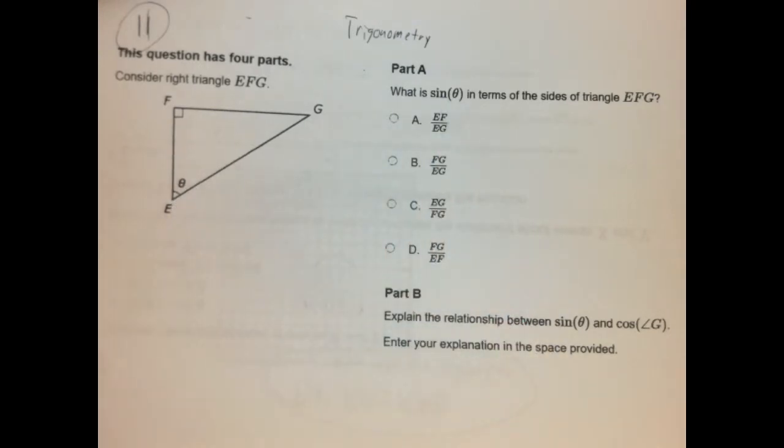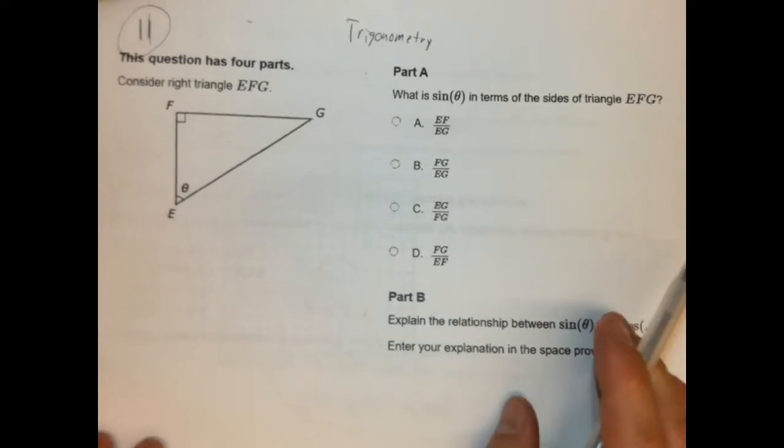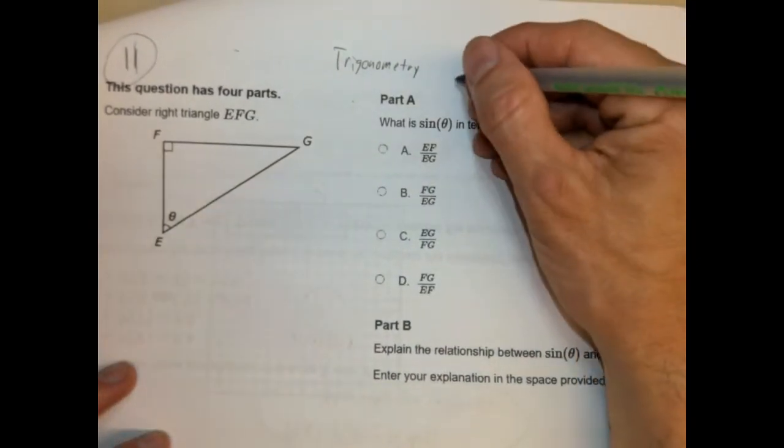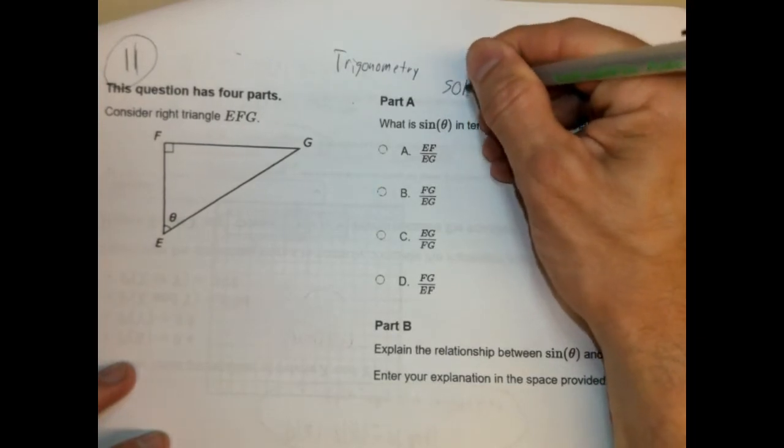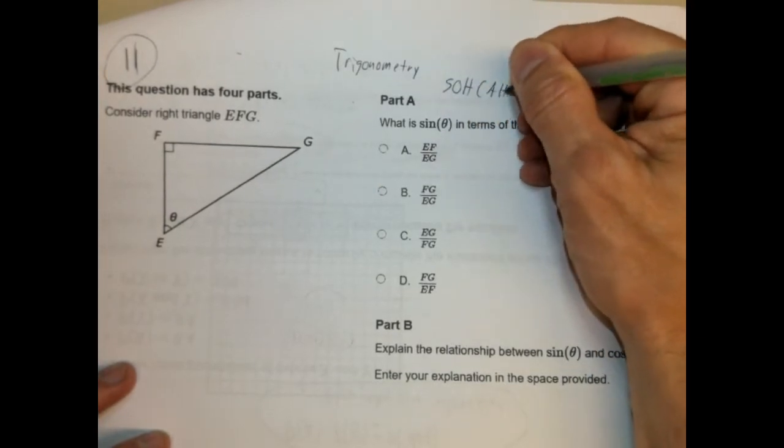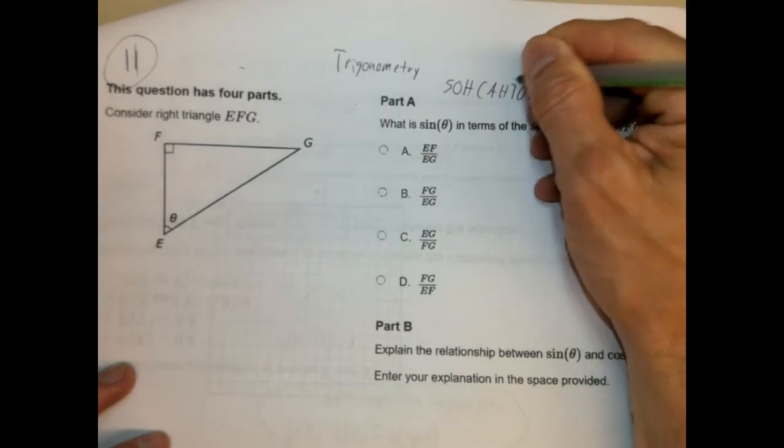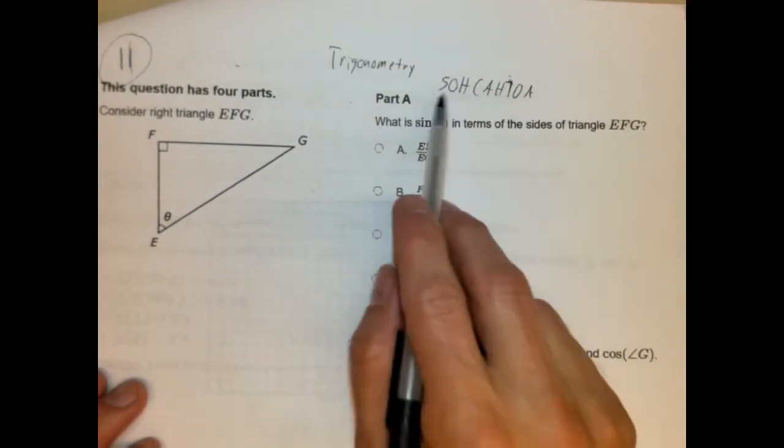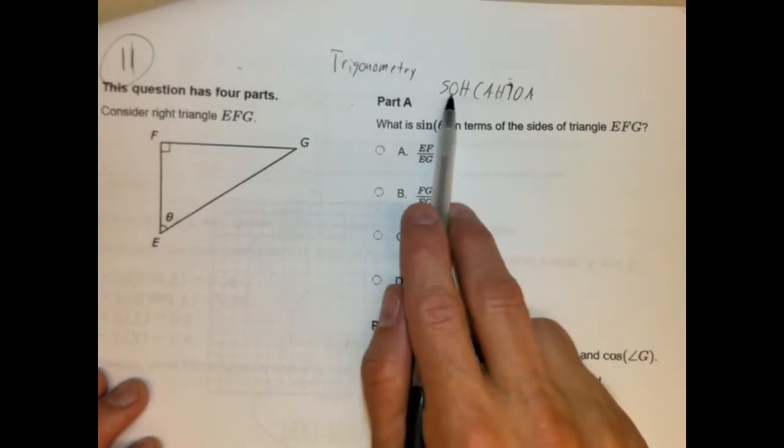So before anything, you want to be using your scrap paper for this problem. Okay? So I always like to write the acronym that helps us remember our trigonometric ratios, SOHCAHTOA. And I know you wouldn't need this necessarily because the reference guide has this, but it writes a little differently. So, okay, sine is opposite over hypotenuse, if you remember that, right?